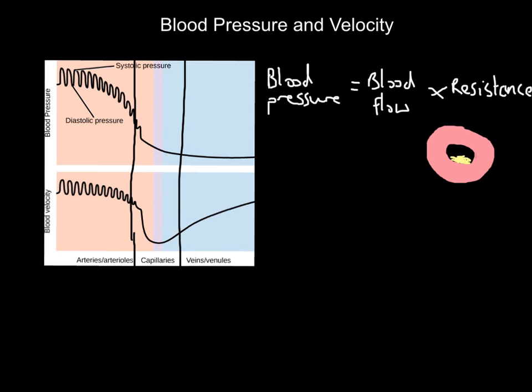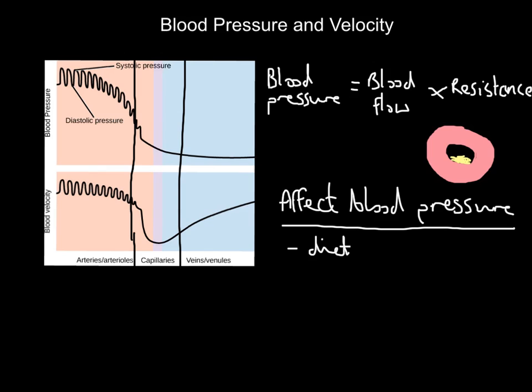Just before we quickly move on to blood velocity, there's one question that has come up in the past: what factors affect blood pressure in arteries? Three marks I think. Linking it to that diagram we've drawn above, diet affects the blood pressure because if I have a bad diet full of fats, that's where the fatty deposits build up and that increases the resistance.